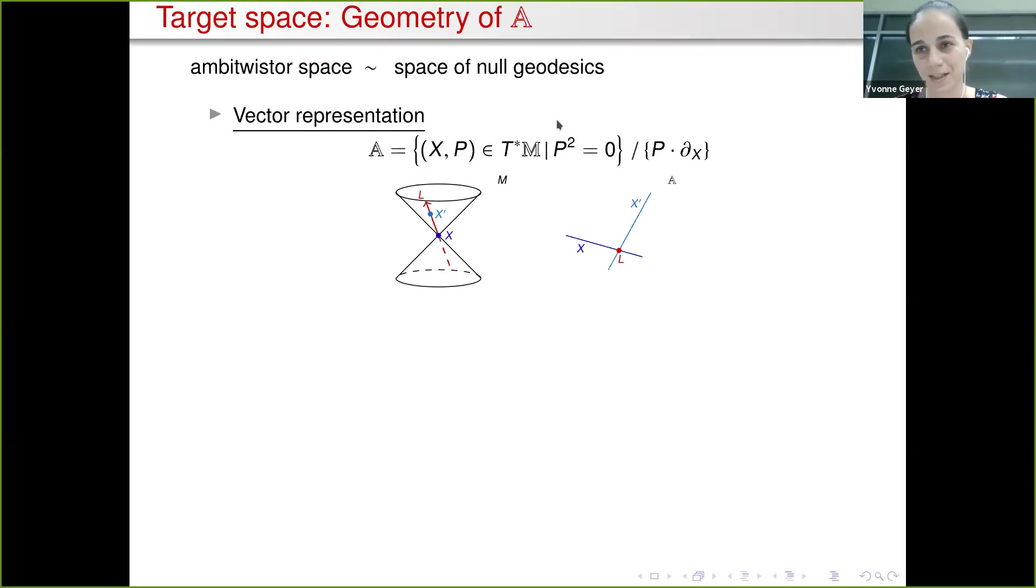This is very intuitive because massless particles travel along null geodesics, so it's intuitively clear this might give something more simple or give rise to more simple amplitude descriptions. One of the key features is that the correspondence between ambitwister space and spacetime is actually non-local. In particular, a point in ambitwister space as we define it here is a null geodesic, just a light ray in complexified spacetime. The opposite way around, points correspond to projective quadrics in ambitwister space.